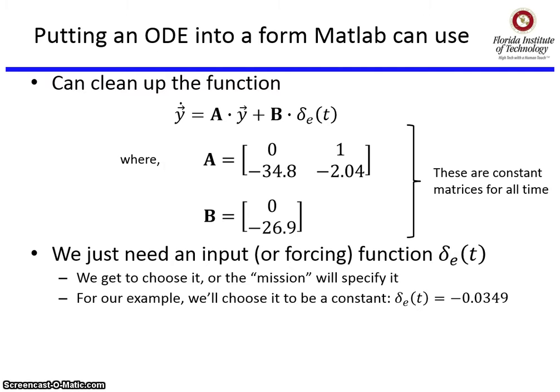The only thing we need now is our input or forcing function. We get to choose it, or the mission will specify it. For our example, we'll choose it to be constant: δₑ(t) = -0.0349, which corresponds to a 2 degree elevator input.